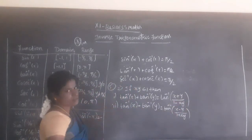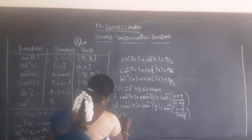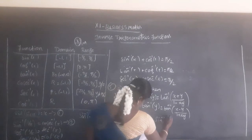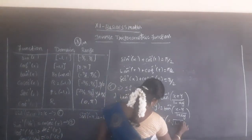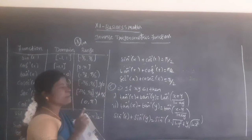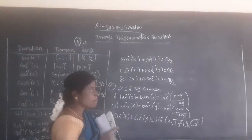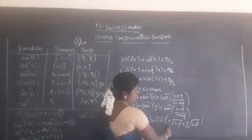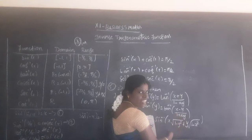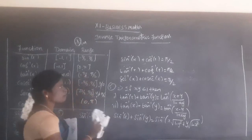The sixth property: sin inverse of x plus sin inverse of y equals sin inverse of (x times root of 1 minus y squared, plus y times root of 1 minus x squared).